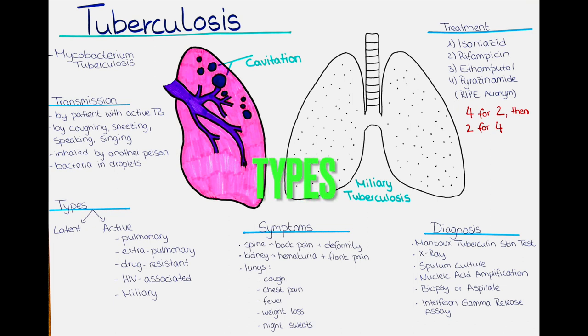What are the different types of tuberculosis? There are two primary types: the latent tuberculosis infection and the active tuberculosis disease. Latent tuberculosis infection is when a person has been infected with the bacteria but does not have any symptoms of the disease. The bacteria are dormant and not actively growing in the body. People with a latent tuberculosis infection have a positive tuberculosis skin test or blood test but do not have any other signs of the disease. Latent tuberculosis infection can progress to active tuberculosis disease if the immune system becomes weakened.